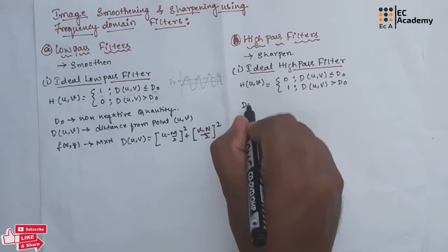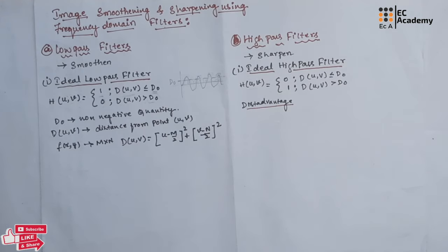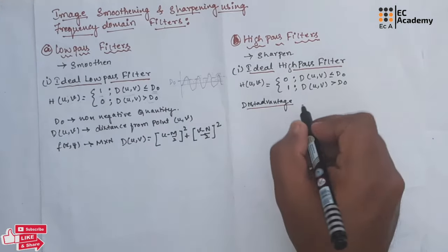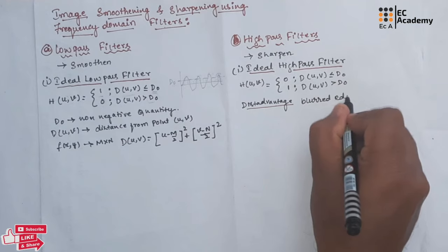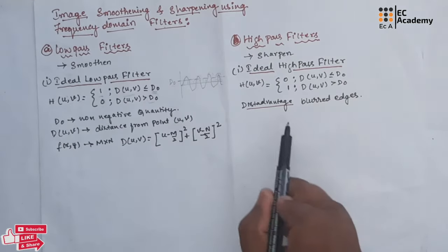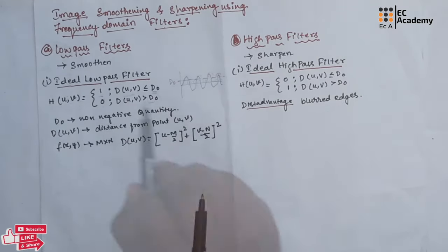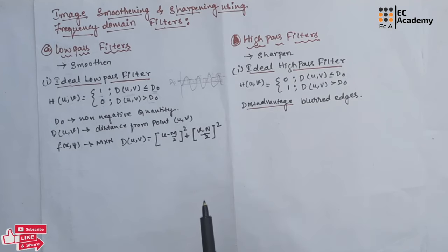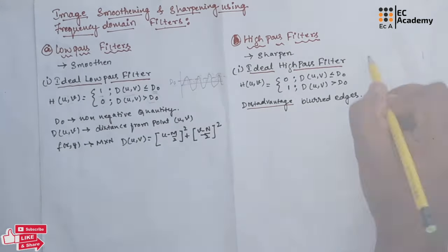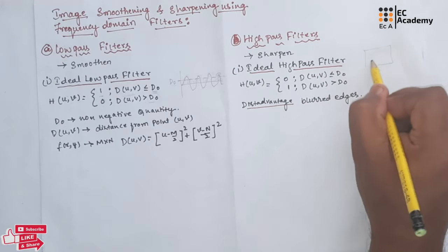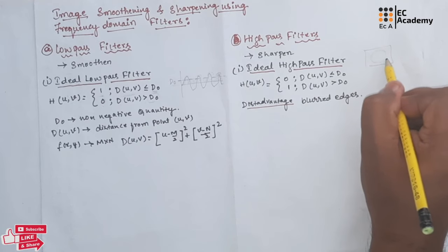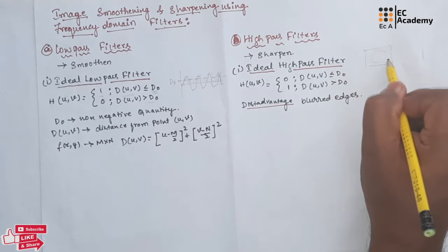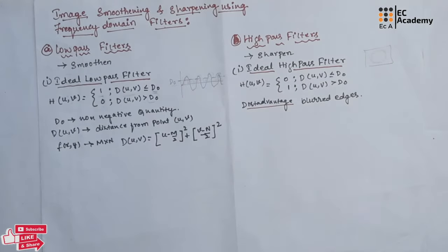The major disadvantage of the ideal high pass and low pass filter is that after processing we will obtain blurred edges. If we take an image with an object and the edges are blurred, we cannot differentiate between the object and the other data in the image. This is one of the key disadvantages of the ideal low pass and high pass filter.